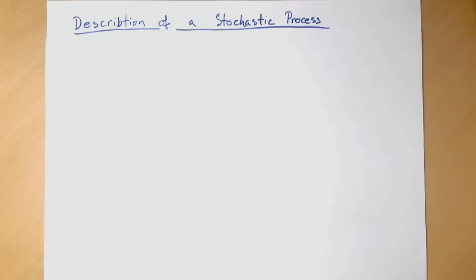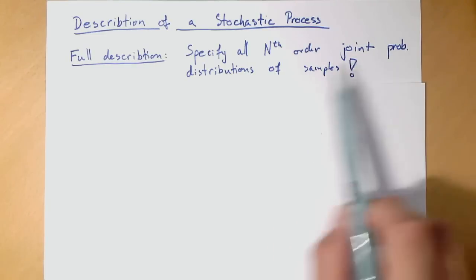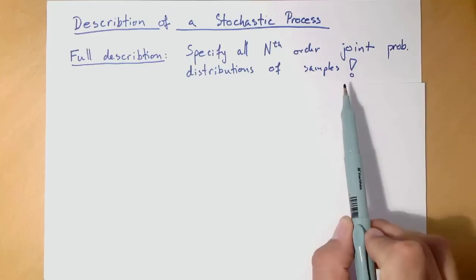Can we describe all probabilities of a stochastic process, or the probability distribution of a stochastic process? It turns out we can do so, but the full description actually requires specifying all nth order joint probability distributions of samples.